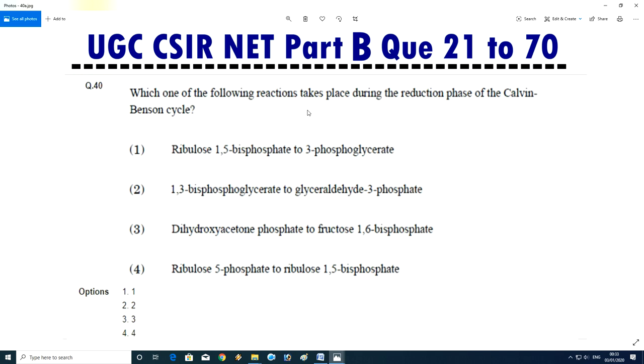Question No.41 - Which one of the following reaction takes place during the reduction phase of Calvin-Benson cycle? Ribulose 1,5-bisphosphate to 3-phosphoglycerate, 1,3-bisphosphoglycerate to glyceraldehyde 3-phosphate, fructose 1,6-bisphosphate, or ribulose 5-phosphate to ribulose 1,5-bisphosphate. Answer is second, 1,3-bisphosphoglycerate to glyceraldehyde 3-phosphate.